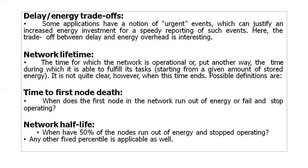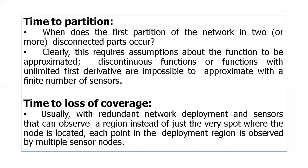Key energy efficiency metrics include: network lifetime — the time the network operates fully connected without failure; time to first node death — when the first node runs out of energy; network half-life — when 50% of nodes have run out of energy and stopped operating; and time to partition — when the network first splits into two disconnected parts.